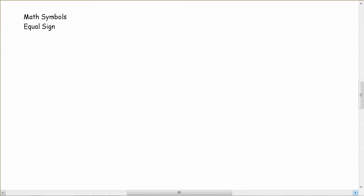Hi, first grade. It's Dr. B. I want to talk to you today about math symbols, the first one being the equal sign. You can see the words there and that's what it looks like. It's just two lines next to each other like this.